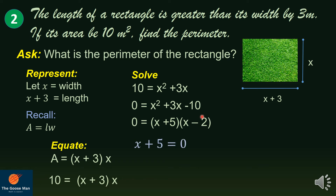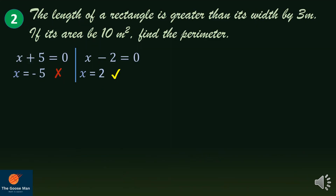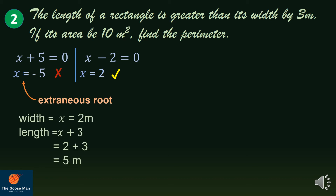Applying the zero property: x plus 5 equals 0 gives x equals negative 5. On the other hand, x minus 2 equals 0 gives x equals 2. From our solution, x equals negative 5 and x equals positive 2. But x equals negative 5 is not acceptable since width cannot be negative — we call this an extraneous root, which is to be rejected.